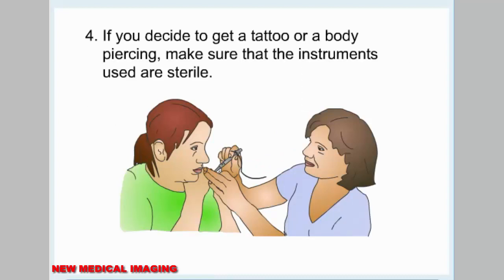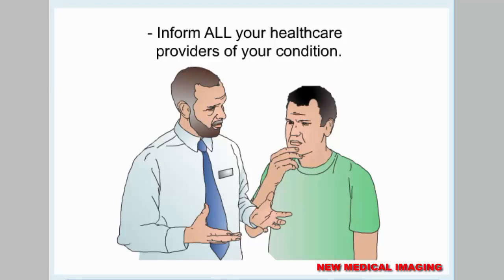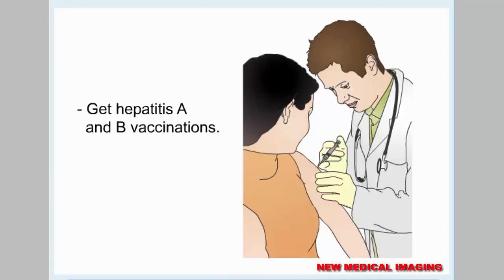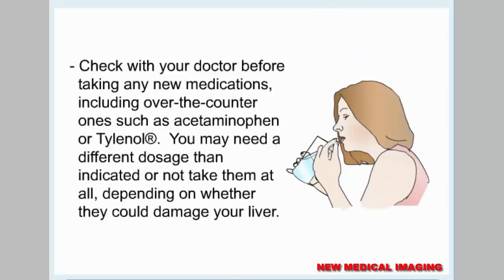If you decide to get a tattoo or a body piercing, make sure that the instruments used are sterile. If you have hepatitis C, there are certain precautions you should take to keep yourself and others as healthy as possible: inform your sexual partners about your condition; inform all your health care providers of your condition; do not donate blood or blood products; get hepatitis A and B vaccinations; do not drink alcohol; check with your doctor before taking any new medications, including over-the-counter ones such as acetaminophen or Tylenol. You may need a different dosage than indicated, or not take them at all, depending on whether they could damage your liver.